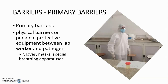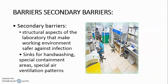Barriers are divided into primary barriers — physical barriers or personal protective equipment between the lab worker and pathogen, such as gloves, masks, and special breathing apparatuses — and secondary barriers, which are structural aspects of the laboratory that make the working environment safer, including sinks for hand-washing, special containment areas, and special air ventilation patterns.